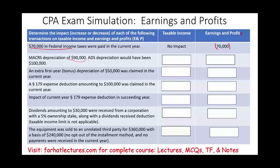Next transaction: MACRS depreciation is $90,000 and the alternative depreciation system (ADS) rate is $100,000. For taxable income, we use MACRS — that's a $90,000 deduction. For the earnings and profit adjustment, we should have used the ADS amount of $100,000, so we deduct an additional $10,000. The adjustment to E&P is negative $10,000, bringing the total depreciation deducted for E&P to $100,000.